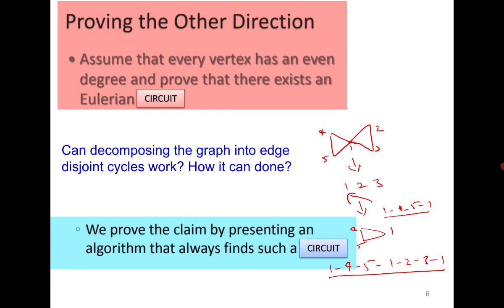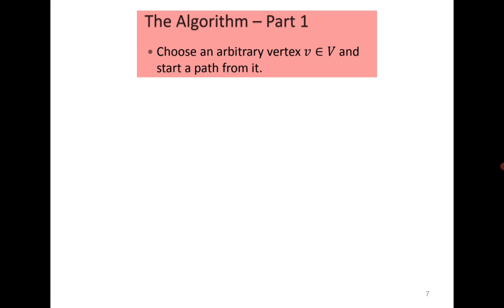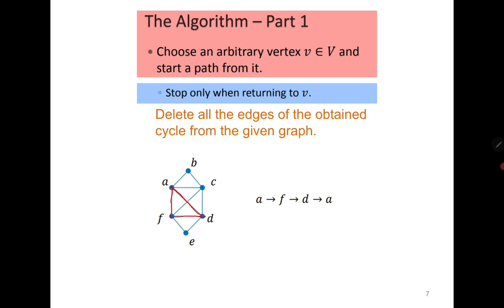To prove it, we are going to devise an algorithm. It starts with an arbitrary vertex V. Since the graph is connected, there is always a path. You choose any path whichever you want. Since each vertex has even degree, it means it has at least one cycle. When you choose a vertex, you come back to the same vertex. Something like this: you start with A, you go to F, then D, and then you come back to A.